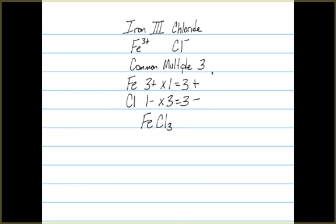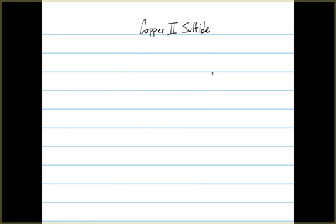Copper(II) sulfide: in this case the copper is a 2+ and the sulfide is a 2-. Since both of them have the same number for the oxidation states, we don't need to worry about a common multiple. They are equal to each other, and therefore all we need to write is CuS.